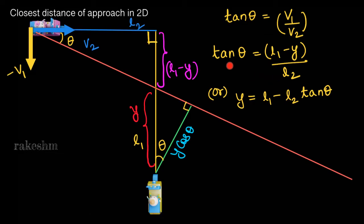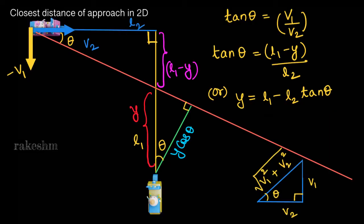Rearranging the geometric equation in terms of y, we get y equals l1 minus l2·tan theta. Since tan theta equals v1 by v2, if v1 and v2 are the two sides, the hypotenuse will be root over v1 squared plus v2 squared. From this we can find sin theta equals v1 over root(v1² + v2²) and cos theta equals v2 over root(v1² + v2²).